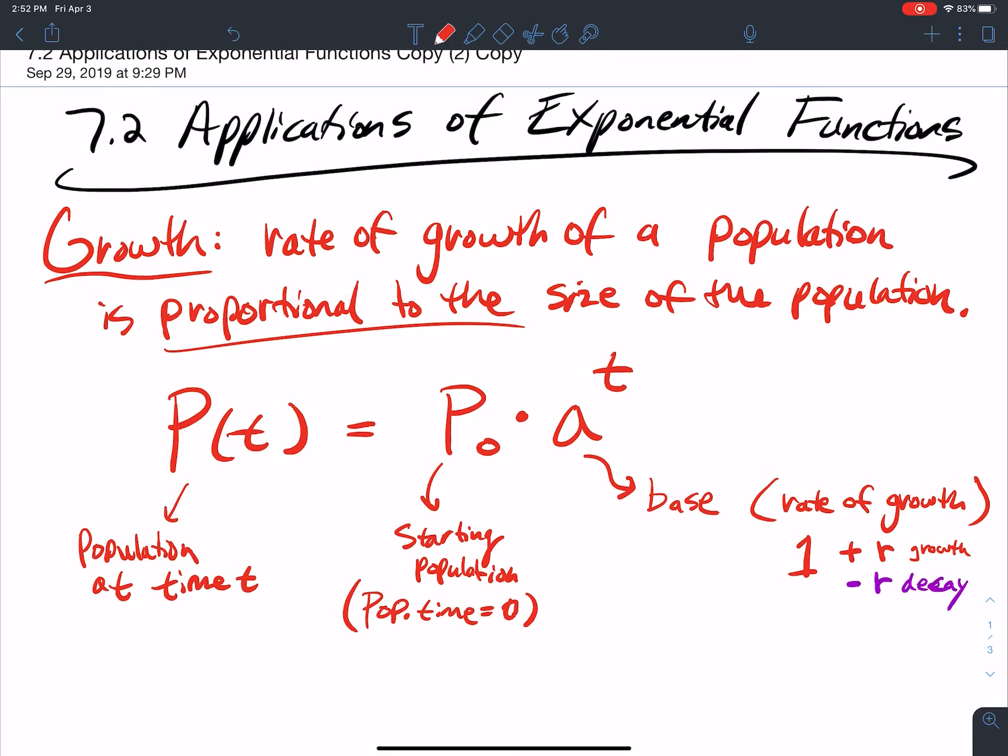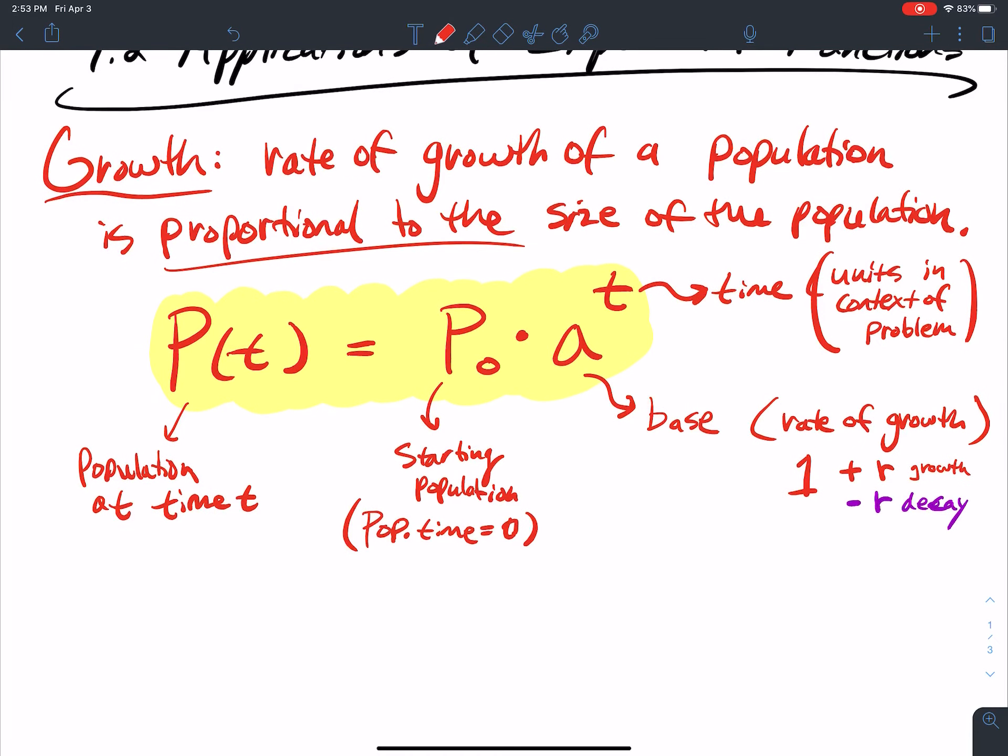The t here represents time, and the time is in the units. The units are in the context of the problem. So your units' time could be days, months, years, hours, seconds, minutes, whatever the unit is in the problem. That's what you're going to use for your model that you're going to set up using this formula right here.